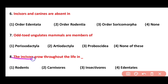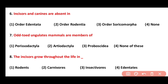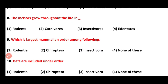Question 8. Incisors grow throughout the life in: rodents, carnivores, insectivores, or Edentata. Correct answer is option 1. In rodents, incisors grow throughout life.